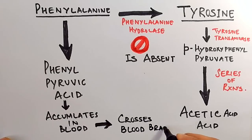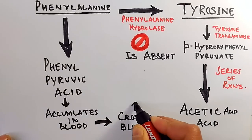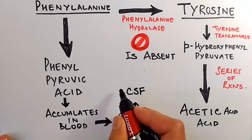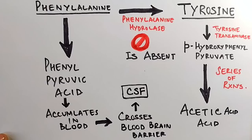With the accumulation of phenylpyruvate acid in our blood, there are lethal effects, because this keto acid can cross our blood-brain barrier. When phenylpyruvate crosses the blood-brain barrier, it gets into the cerebrospinal fluid (CSF), where it inhibits the development of the brain, thus causing mental retardation in children. This condition is therefore also called phenylpyruvic aciduria.